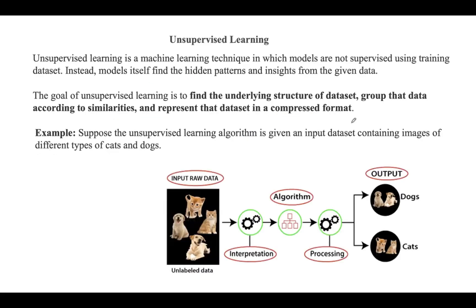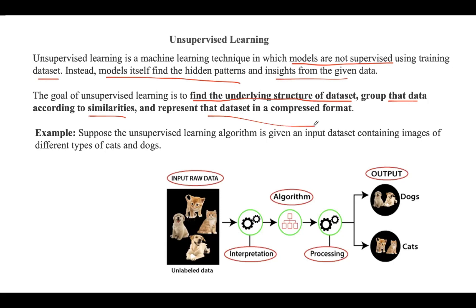Unsupervised learning is a machine learning technique in which models are not supervised using a training dataset. There is no labeled data; the model itself finds patterns and insights from the given data. It cannot be applied directly to regression or classification problems because unlike supervised learning, we have input data but no corresponding output data. The main goal is to find the underlying structure, group data by similarities, and represent the dataset in a compressed format.